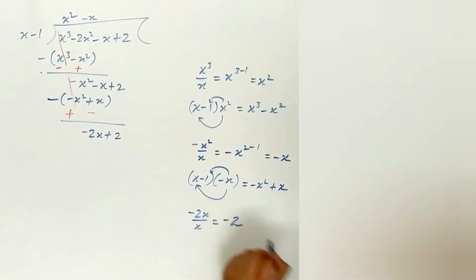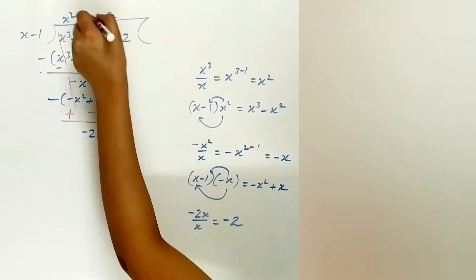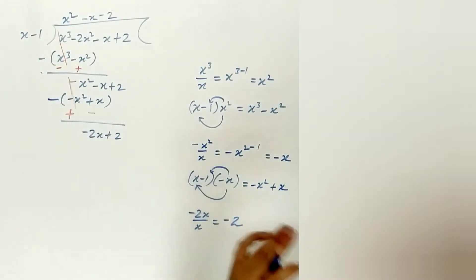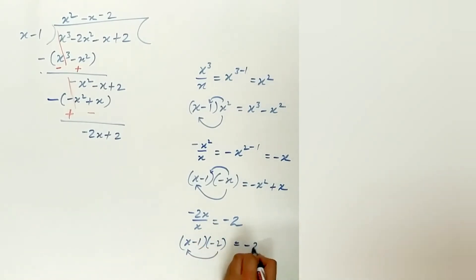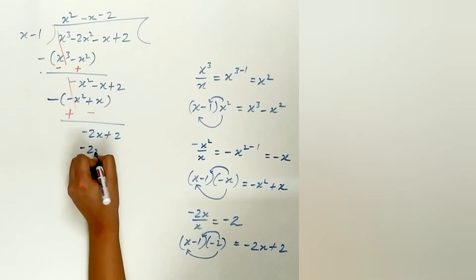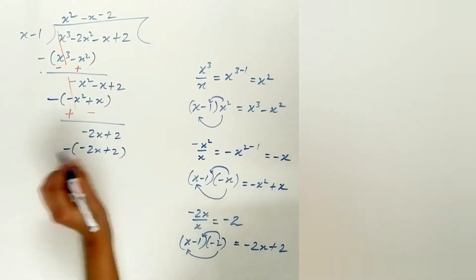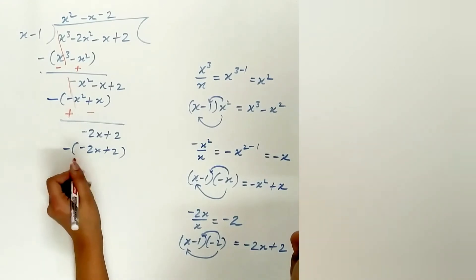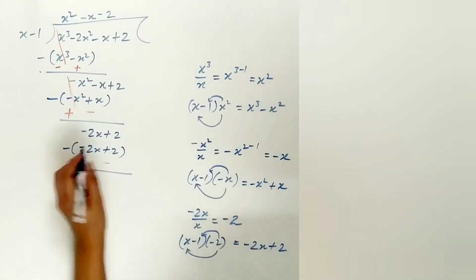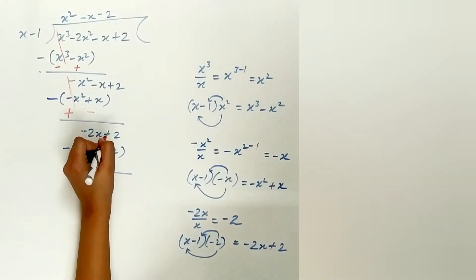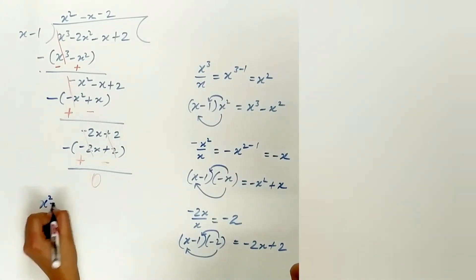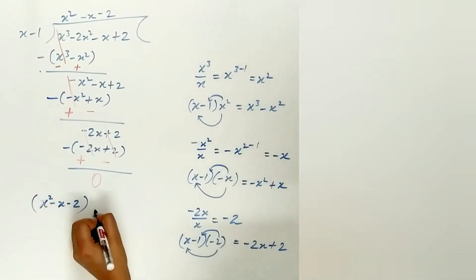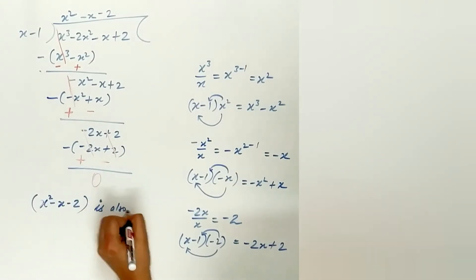Again, divide minus 2x by x, which is equal to minus 2. Multiply minus 2 with the divisor, which gives minus 2x plus 2. Change the sign: minus 2x plus 2x is 0, and plus 2 minus 2 is 0. So x square minus x minus 2 is also a factor of p(x).